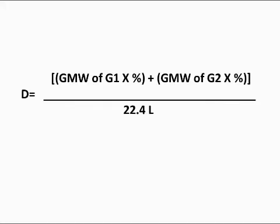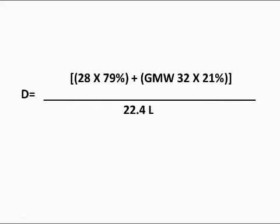So here's our equation again, and we're going to plug it into the equation. Now, for nitrogen, my gram molecular weight was 28, and it was a concentration of 79%. For oxygen, the gram molecular weight is 32, and the mixture was 21% oxygen in the air mix.